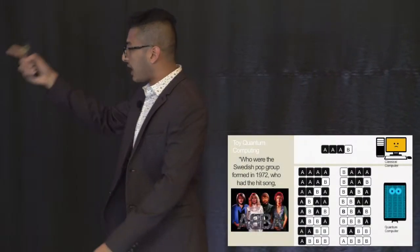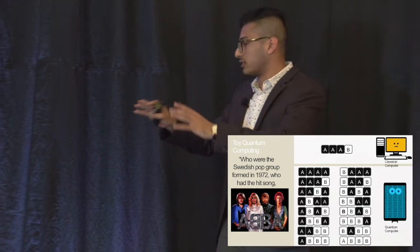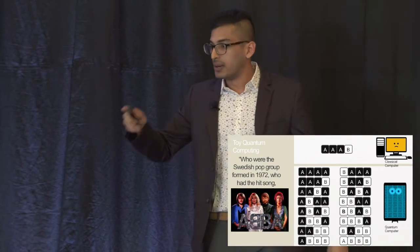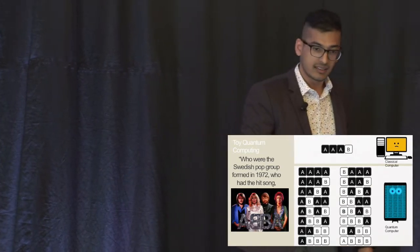Now, this is kind of hard to digest, so let's look at a toy model of quantum computing or computing in general. Let's say we have a classical computer and we have a quantum computer. Let's give them four bits, so four pieces of information. But instead of zeros and ones, let's say that they can be A's or B's.